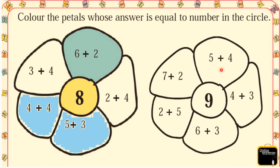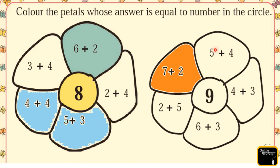Now kids, we have another question and the answer should be 9. Tell me, 7 plus 2 is equal to 9? Count: 7, 8, and 9 — yes! 7 plus 2 is equal to 9, so we color this petal. Next, 5 plus 4 is equal to 9? Yes, 5 plus 4 is equal to 9, so we are going to color this petal in orange.